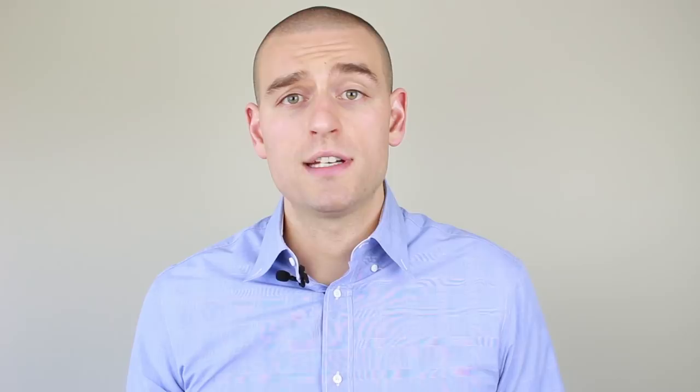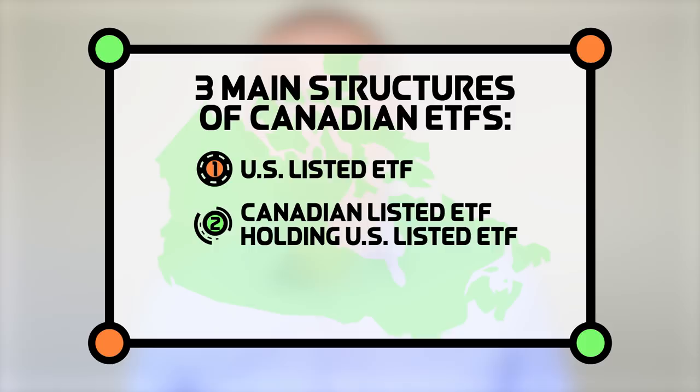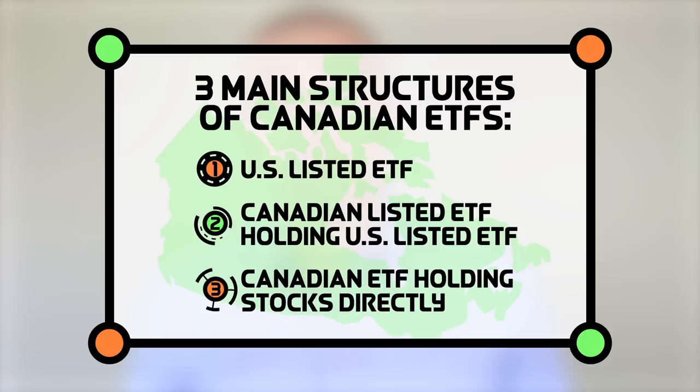The amount of damage that foreign withholding tax will do to your returns depends on the structure of the vehicle that you are using to invest and the type of account that the vehicle is owned in. In the world of ETFs, there are three main structures that a Canadian investor will see: a US-listed ETF, a Canadian-listed ETF that gets its exposure to the market by holding a US-listed ETF, or a Canadian-listed ETF that gets its exposure to the market by holding stocks directly.